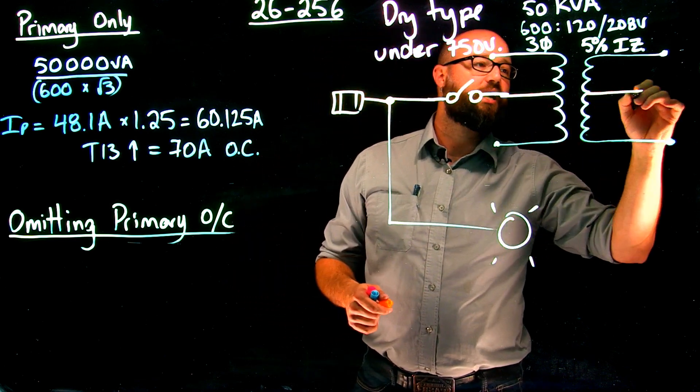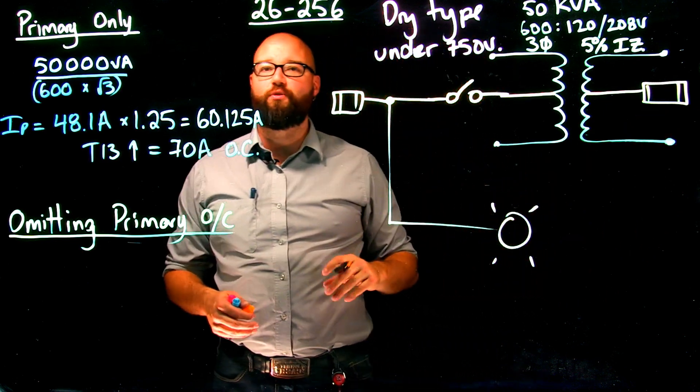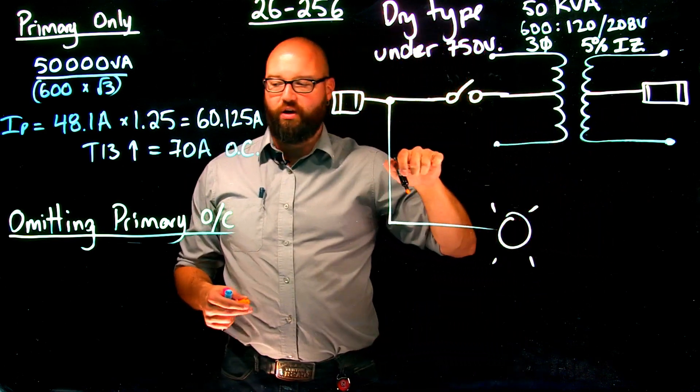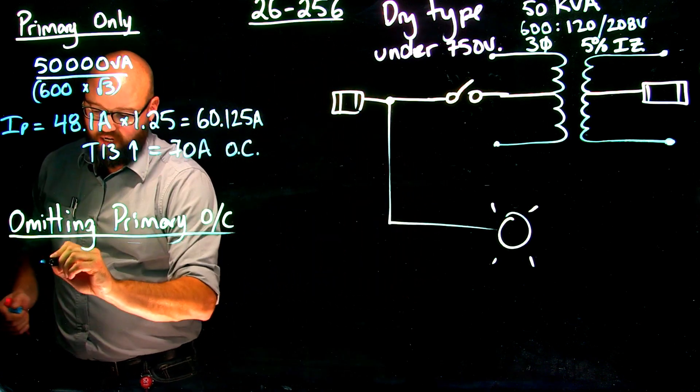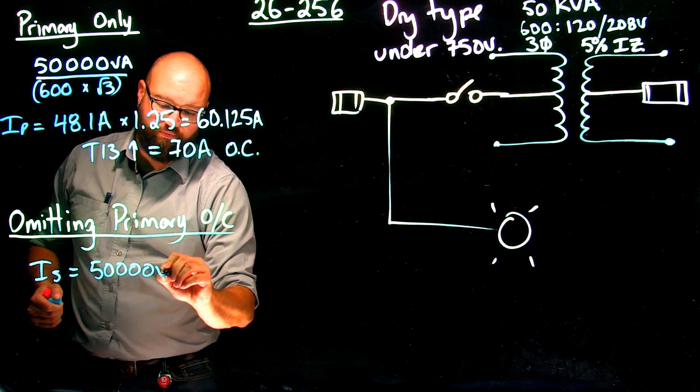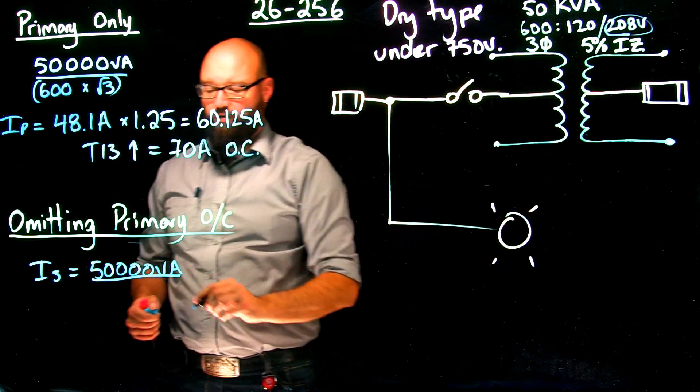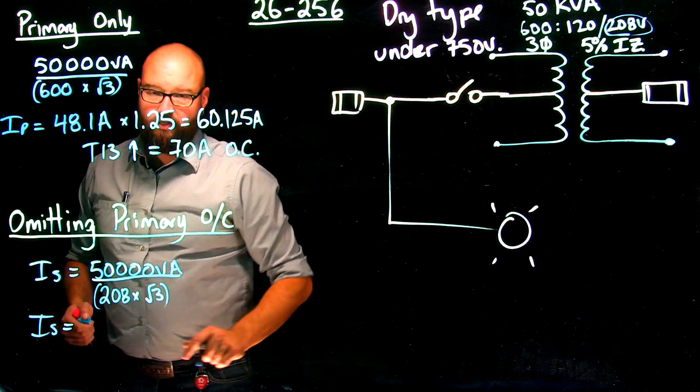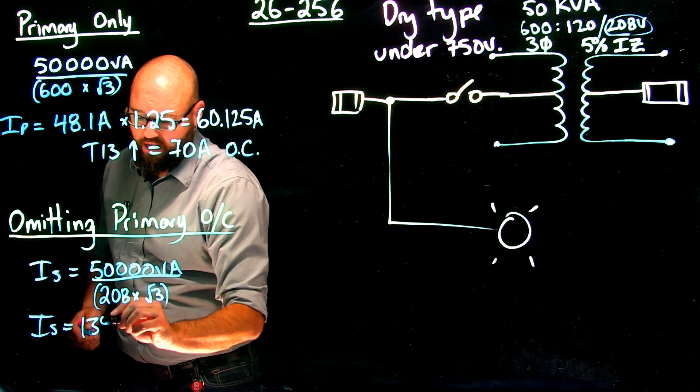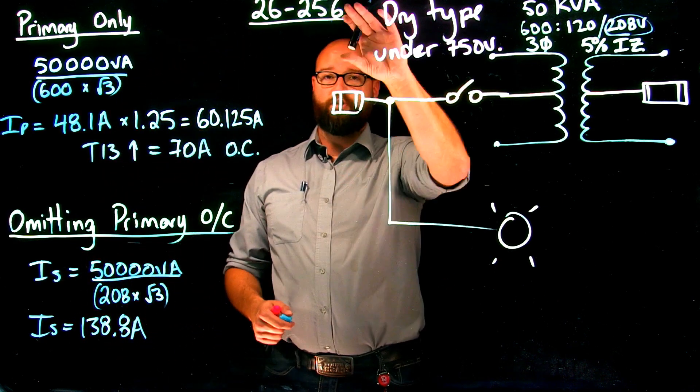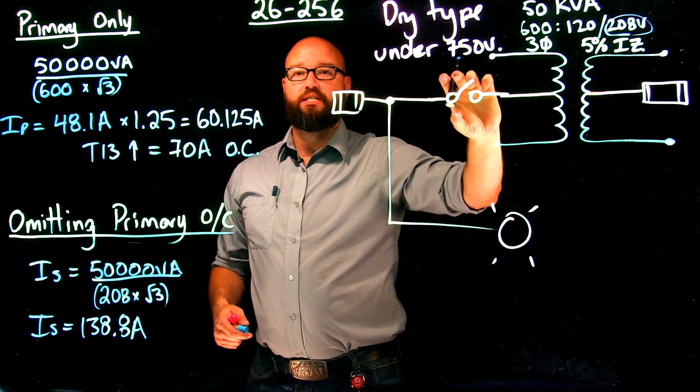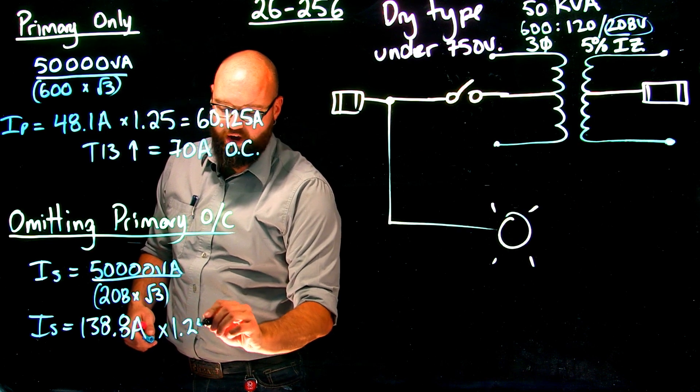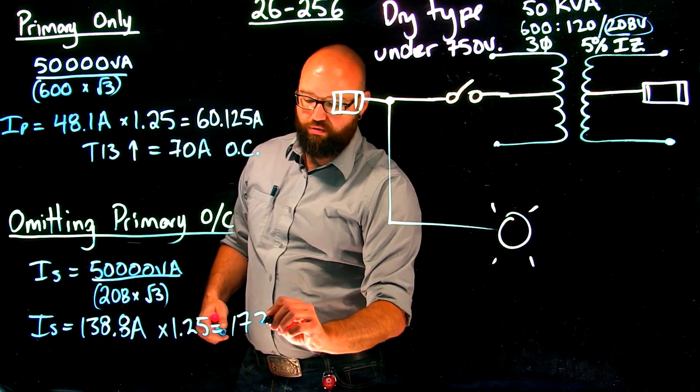And again, it doesn't matter whether it's a breaker or a fuse in this rule, that is set at not more than 125%. So we're going to need to figure out what is our rated secondary current here. So we have current on the secondary is 50,000 VA divided by my secondary line voltage of 208 volts. I end up with current on the secondary is around 138.8 amps. And as we've just read in that rule, to omit this, I have to have a secondary overcurrent set at not more than 125% of rated secondary. So times 1.25 gives me a maximum rated value of 173.5.